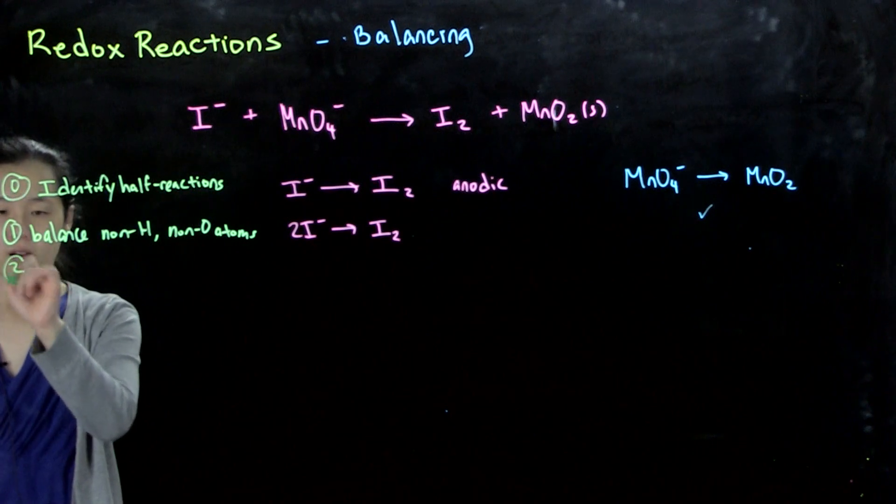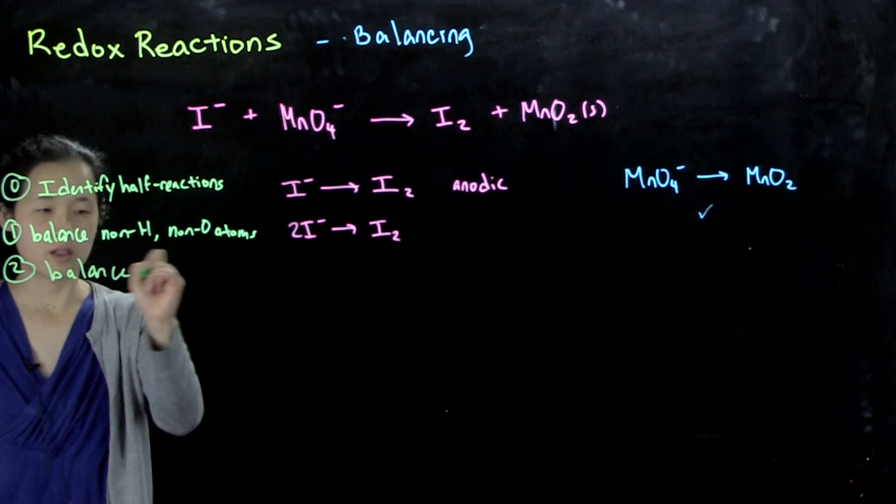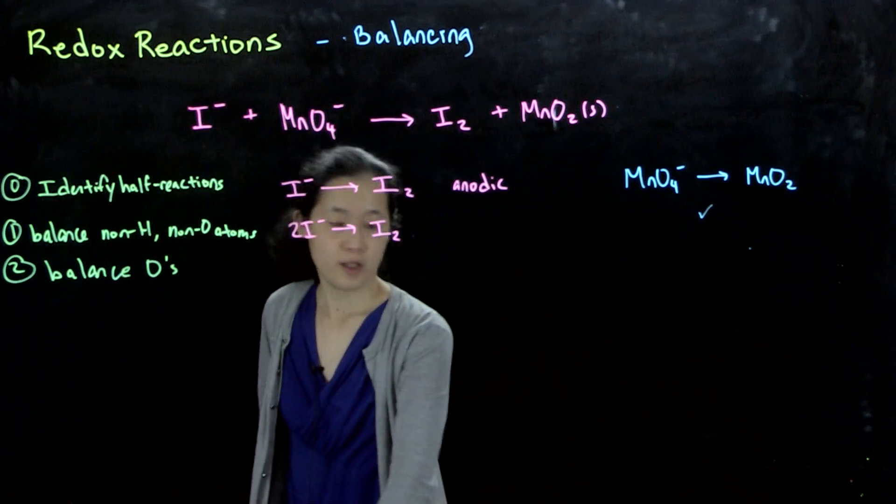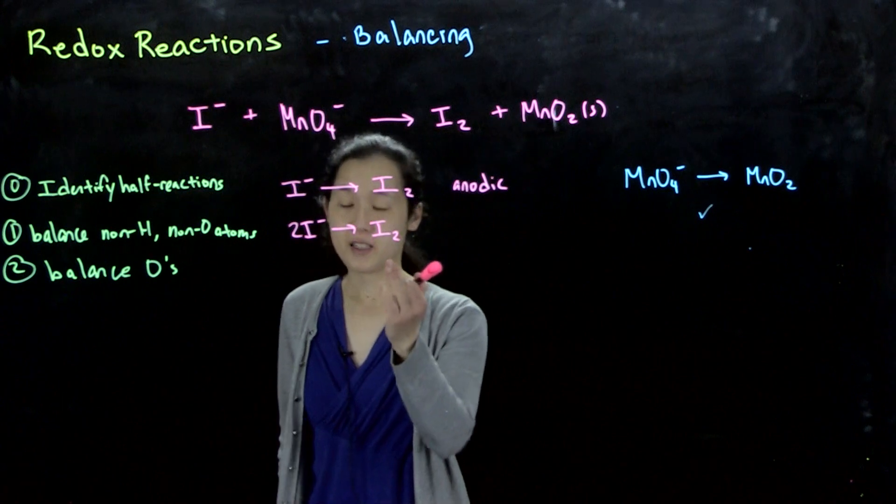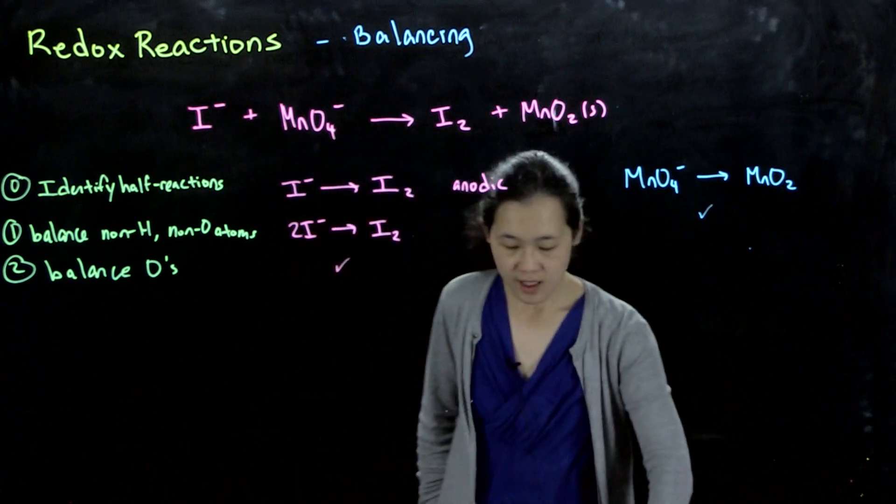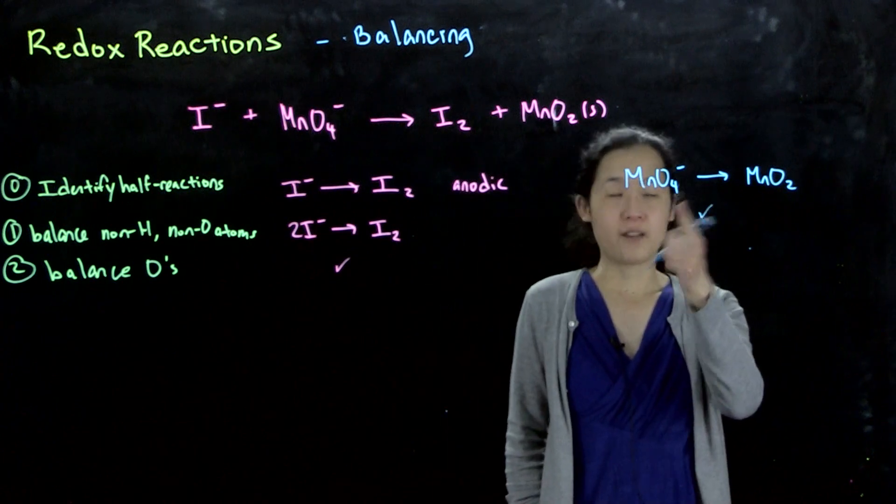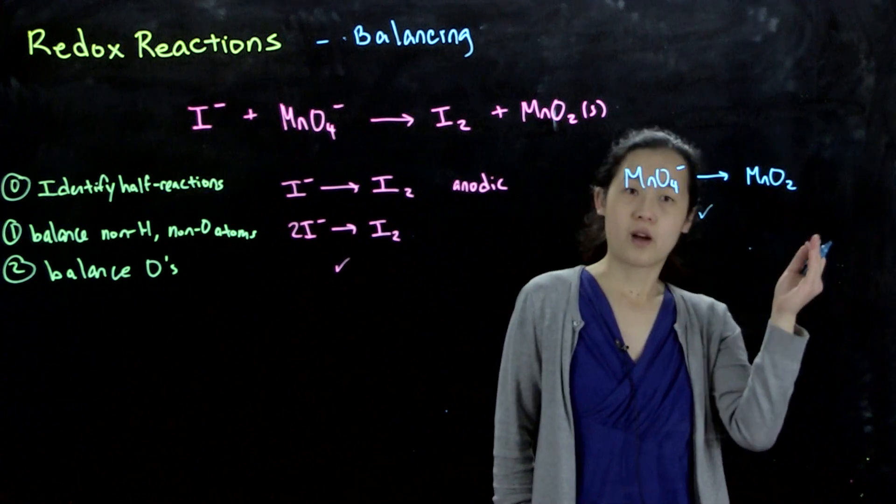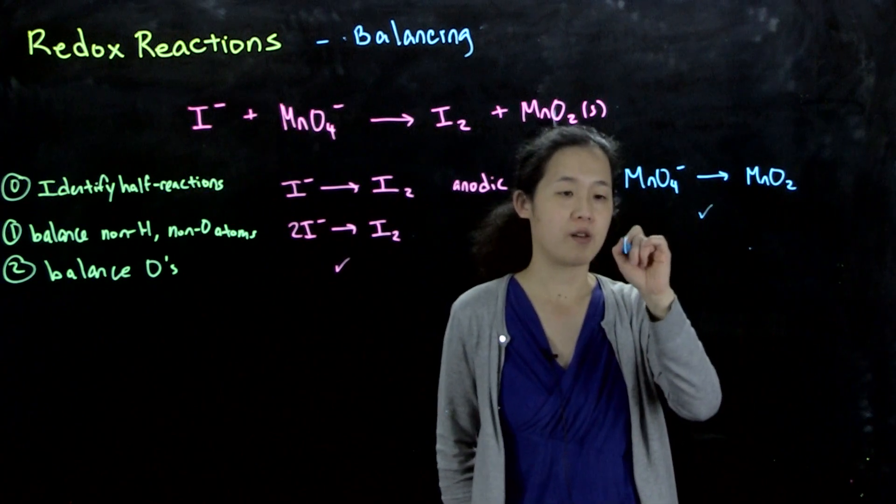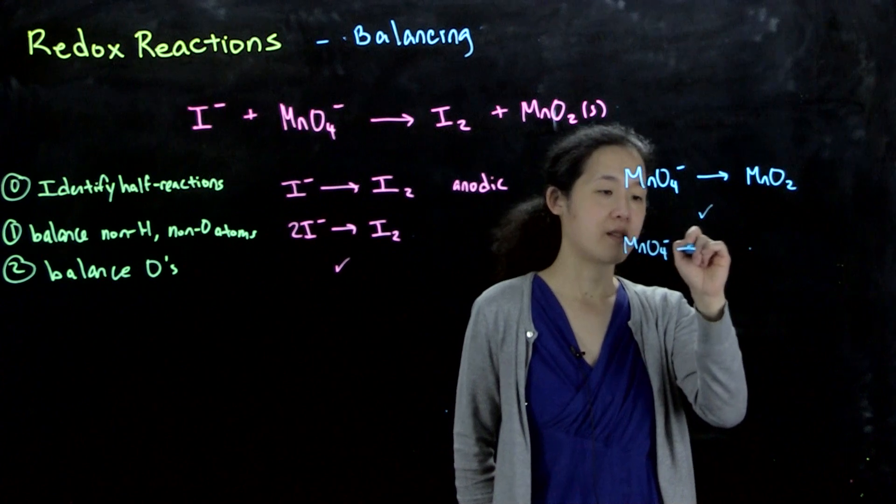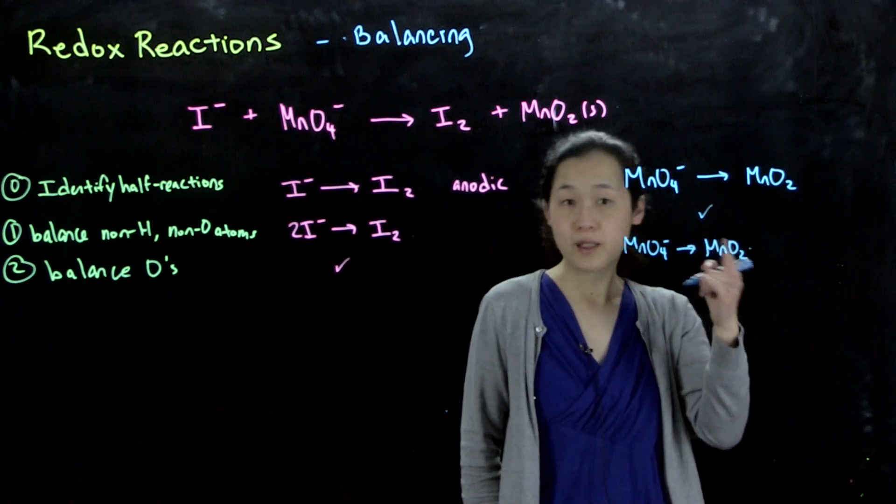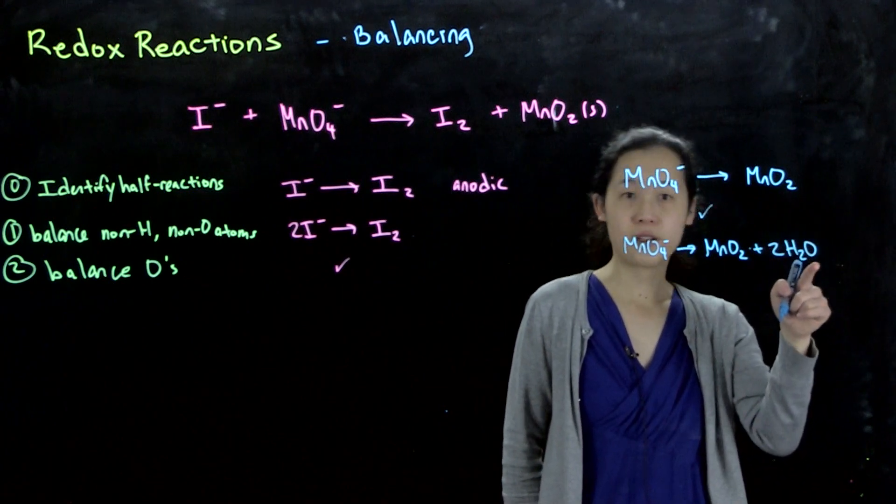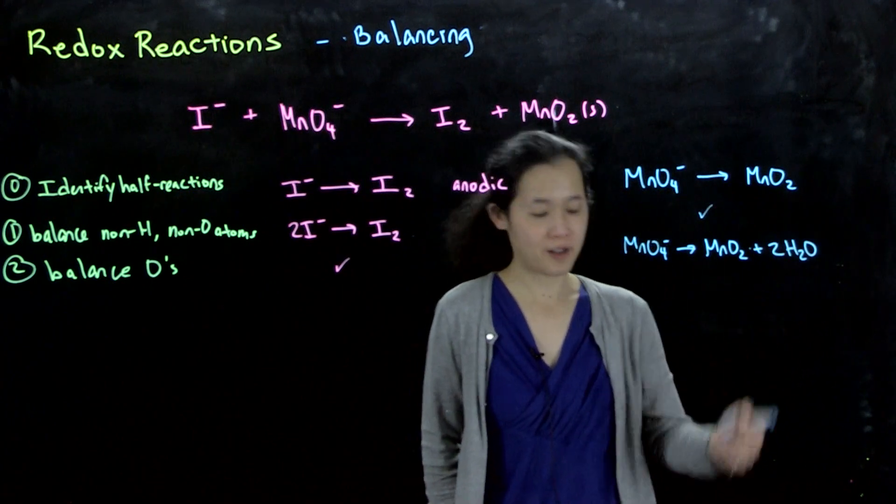Step two: then you want to balance your oxygens. For this iodide oxidation, we don't really have oxygen, so we're good. For here, we have four oxygens on the left and then two on the right side. To balance it out, we add waters for every extra oxygen. Permanganate goes to manganese oxide. We're missing two oxygens, so then we add two waters. Two oxygens, one oxygen per water.